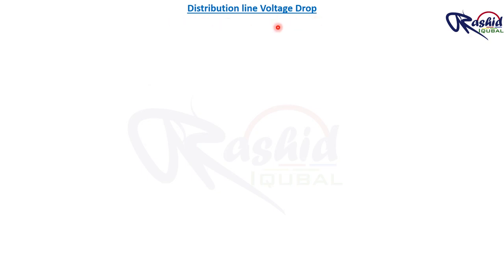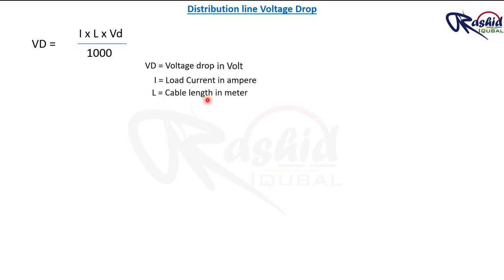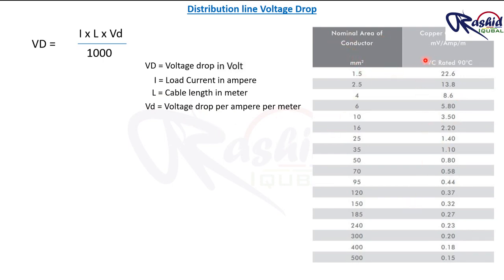Without any delay, first I am writing the voltage drop formula: Vd = I × L × Vd / 1000, where Vd equals voltage drop, I equals load current in ampere, L equals cable length in meter, and Vd equals voltage drop per ampere per meter. You can get this constant value from a cable catalog, where the cable size is listed on the left side and the voltage drop per ampere per meter constant is on the right side.